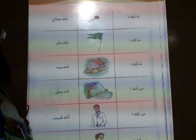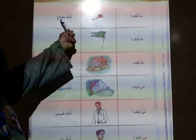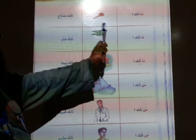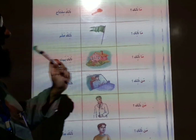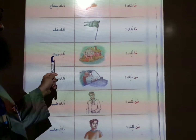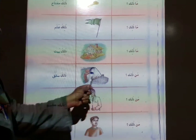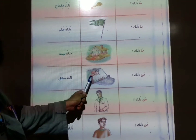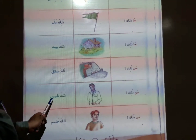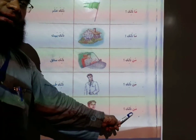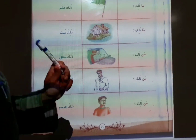Next page, page number 21. Ma dhalika — what is that? Dhalika mistahun — that is ki. Ma dhalika — what is that? Dhalika alamun — that is flag. Ma dhalika — what is that? Dhalika baitun — that is house. Ma dhalika — who is that? Dhalika saikun — that is driver. Ma dhalika — who is that? Dhalika tobibun — that is doctor. Ma dhalika — who is that? Dhalika jasimun — that is Jasim.